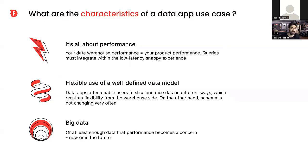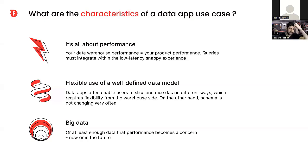The second characteristic is what I call a flexible use of a well-defined data model. By well-defined, I mean the schema itself — the different object tables — is quite static. In a data app use case, we don't tend to see many tables being added on a daily basis. But in terms of actual usage of the schema, that can be quite flexible. We can see a very large variety of queries being executed on the existing schema, and that might change quite rapidly.